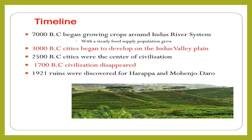In 2500 BC, cities were the center of civilization. In 1700 BC, the civilization suddenly disappeared. Then in 1921, the ruins were discovered for Harappa and Monjodaro.